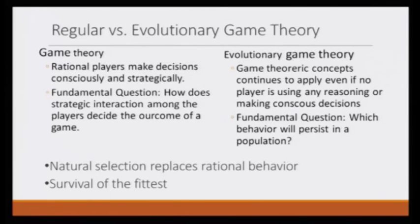As opposed to regular game theory, if we look at evolutionary game theory, it concerns evolution. The players there are animals, and a particular animal would not consciously, rationally, or strategically make any decision. But game theoretic concepts would continue to apply even if no player is using any reasoning or making conscious decisions. The behavior is encoded as a gene, and if a behavior leads to a better outcome, that gene would have better success in spreading in the whole population.